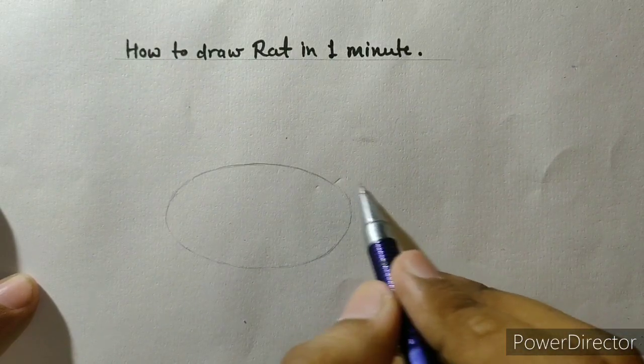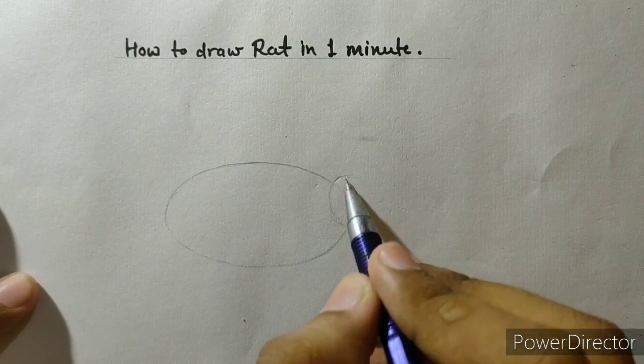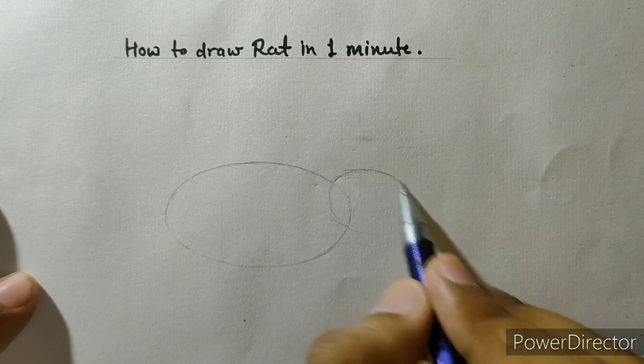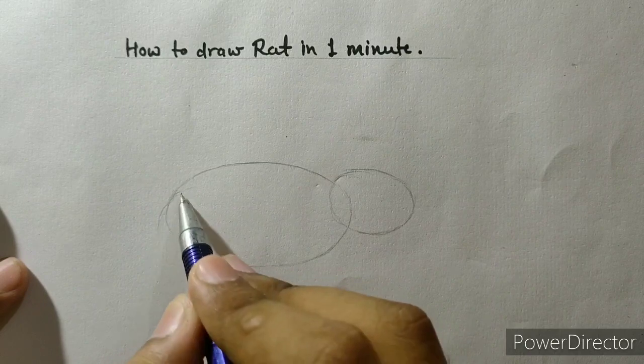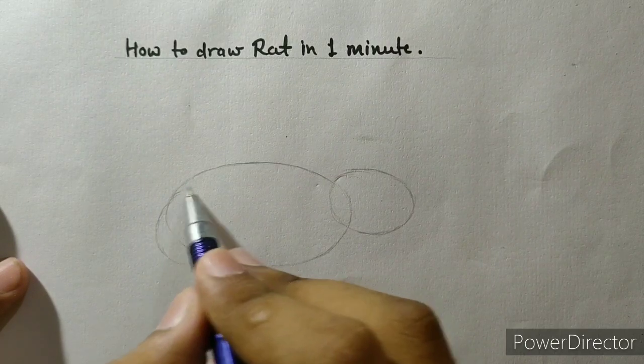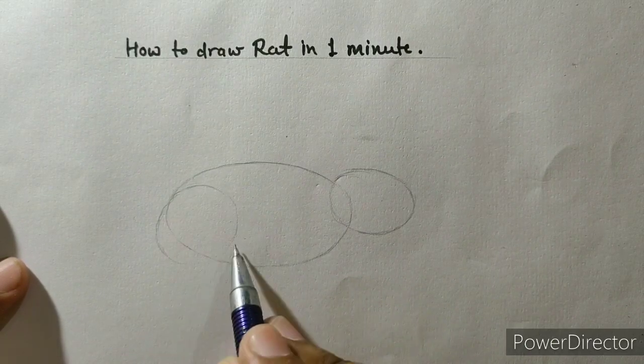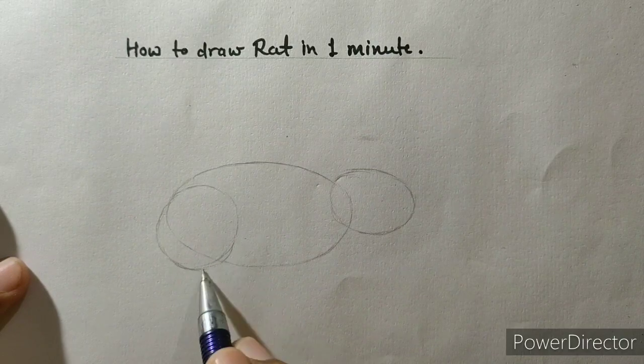Like this. Now draw another oval for its face, and then once again an oval for its leg.